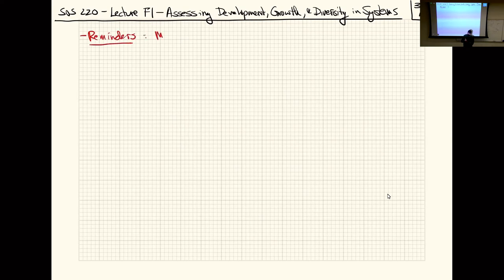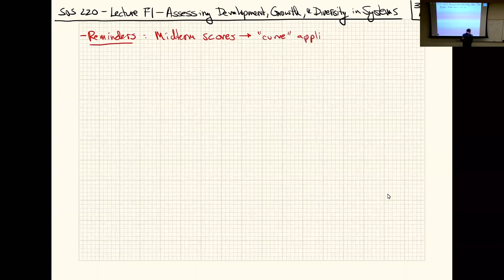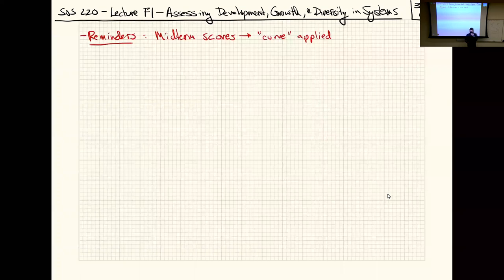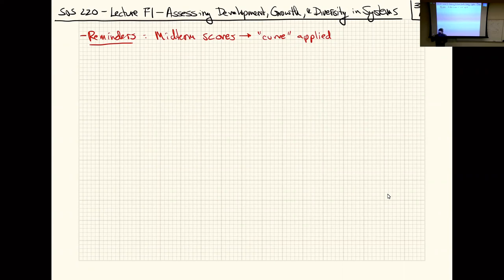Midterm scores have been returned. There's a slight curve applied to both versions. You won't see that on the actual midterm directly, but in Canvas you'll see 'Midterm Stage 1' and then another entry called 'Midterm Stage 1 Adjustment' — that's where the curve is applied. Your actual score is those two things added together, which forms the midterm category that goes into your final grade. At the bottom of Canvas it shows individual weighted categories, and you should see one for Midterm Stage 1 with its weighting.